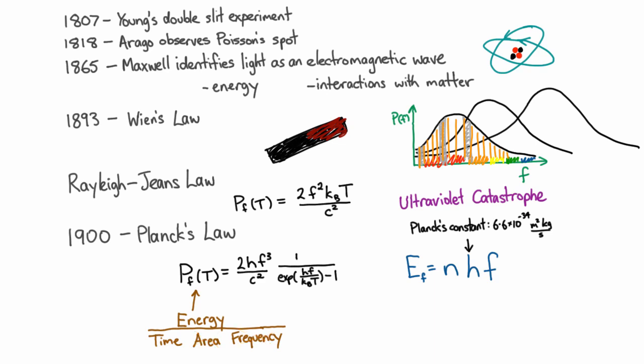So Planck's law very accurately predicted the radiation coming off bodies, but it had to make this crazy assumption that an electromagnetic wave of a particular frequency could only come in packets of energy in these discrete quantized amounts. And so that was the real question that was sitting there: why did this work?